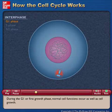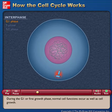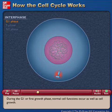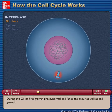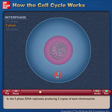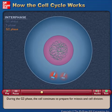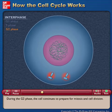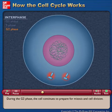During the G1 or first growth phase, normal cell functions occur as well as cell growth. In the S phase, DNA replicates, producing two copies of each chromosome. During the G2 phase, the cell continues to prepare for mitosis and cell division.